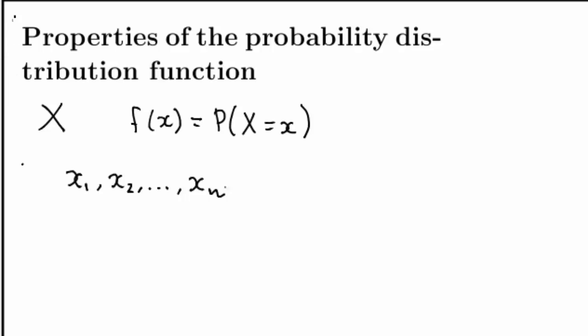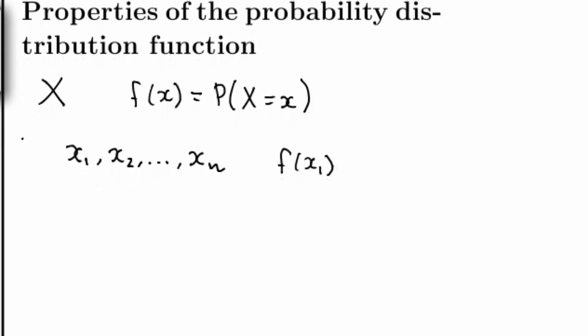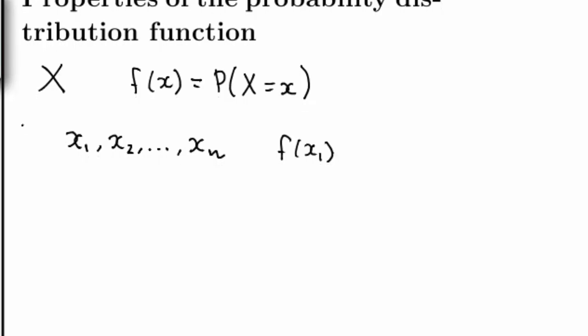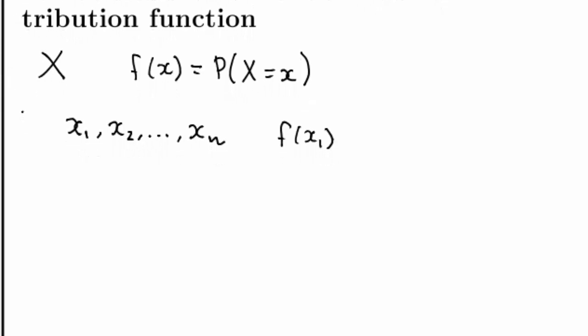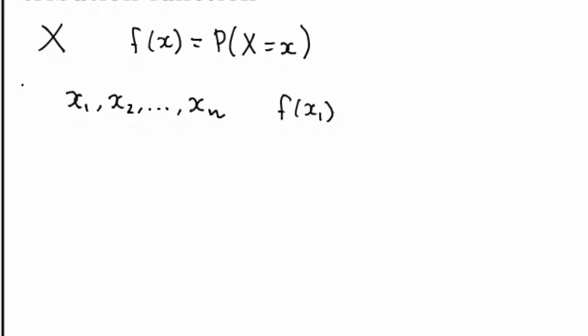For example, if x is the result of tossing a dice, then we have n equal to 6 and we could set x1 to be 1, x2 to be 2, all the way to x6, which would be equal to 6. f of x1 is the probability that my random variable will take on the first possible value. For the fair dice, f would be 1 over 6.